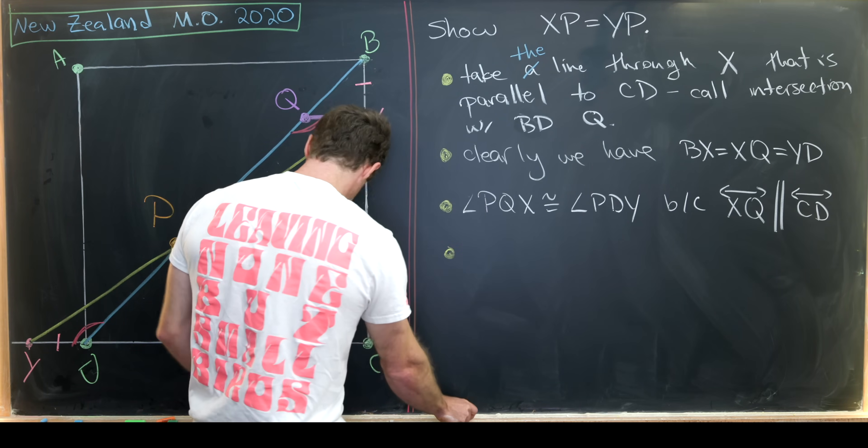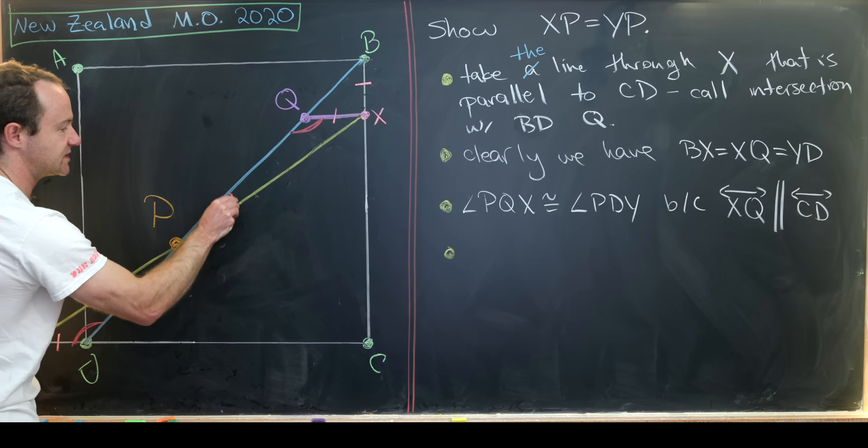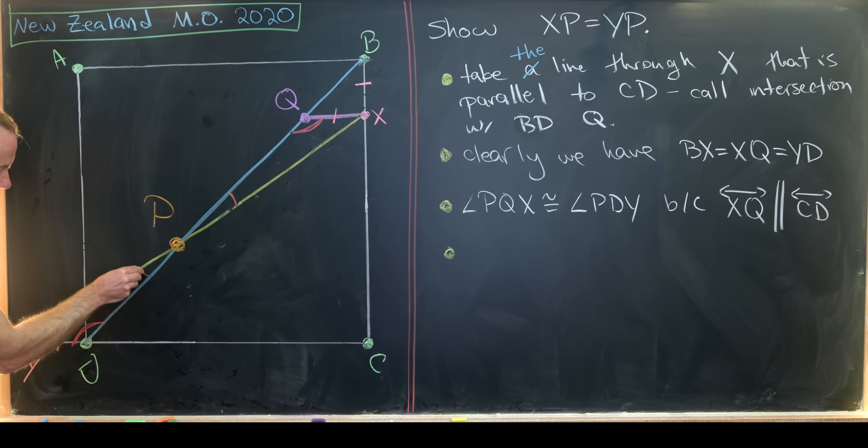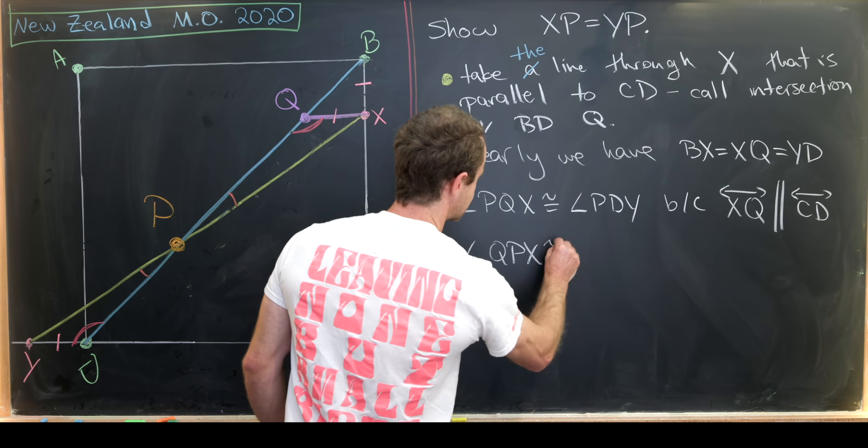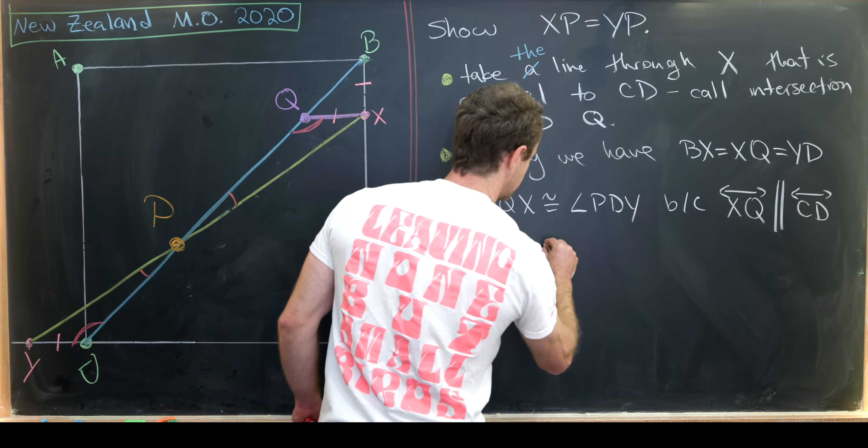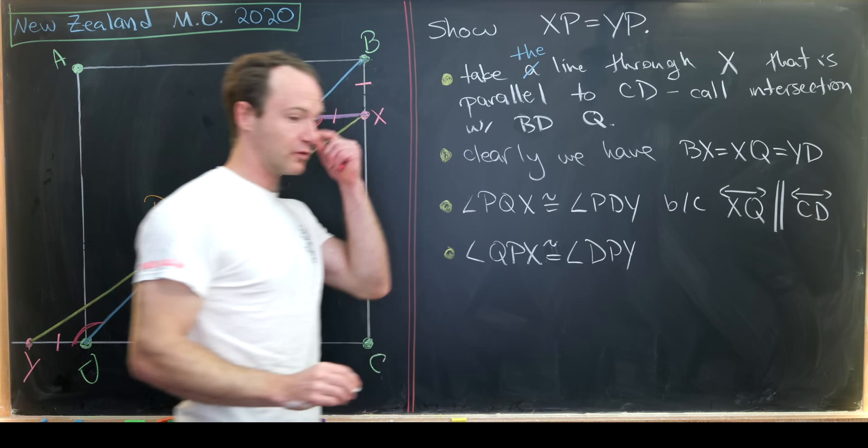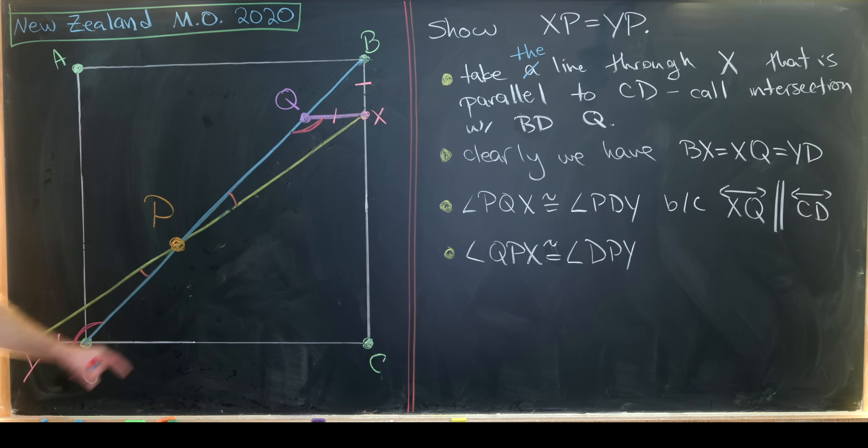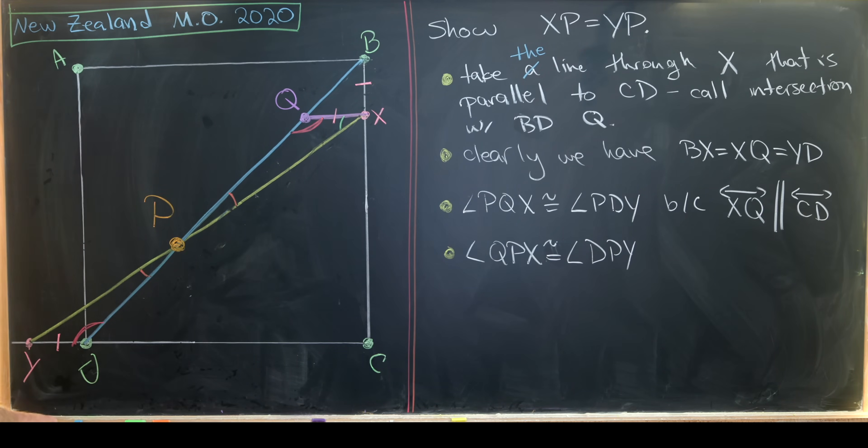Now we're going to do a little bit more angle chasing. So next up, we'll see that this angle right here, that is QPX is congruent to this angle right here, which is DPY. And that's because they're kind of opposite each other at this point right here. So angle QPX is congruent to angle DPY. That's because these are opposite this intersection. But then completing the triangle, we see that angle QXP is congruent to angle DYP.